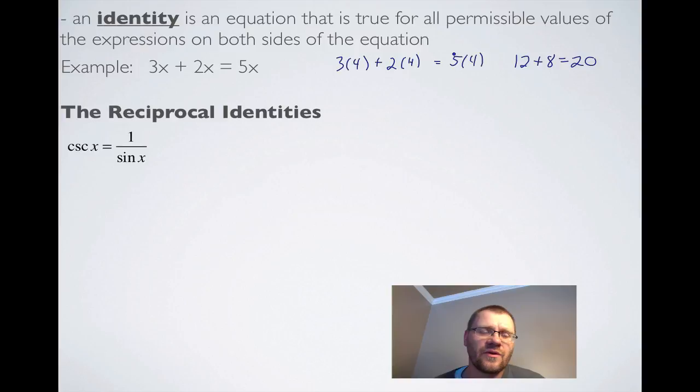Reciprocal identities: there are three of them. The first one that we know is cosecant, which is a reciprocal of sine, secant, which is a reciprocal of cosine, and cotangent, which is a reciprocal of tangent.